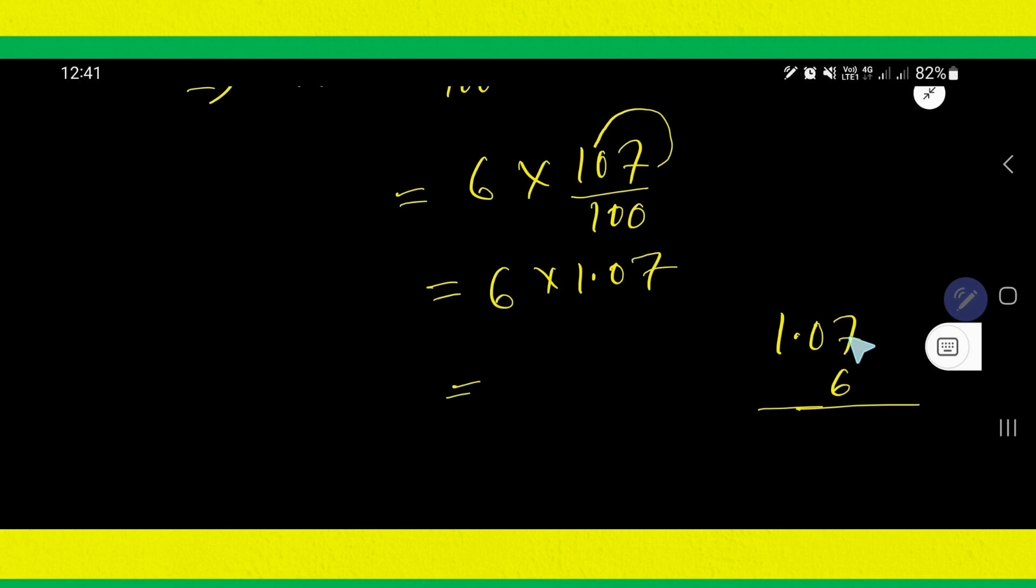Look. 6 times 7 is 42. Okay. Take 2 and carry over 4 here. 6 times 0 is 0, plus 4 is 4. Then, 6 times 1 is 6.